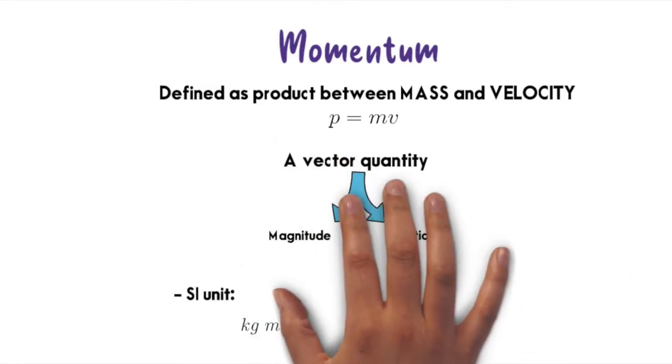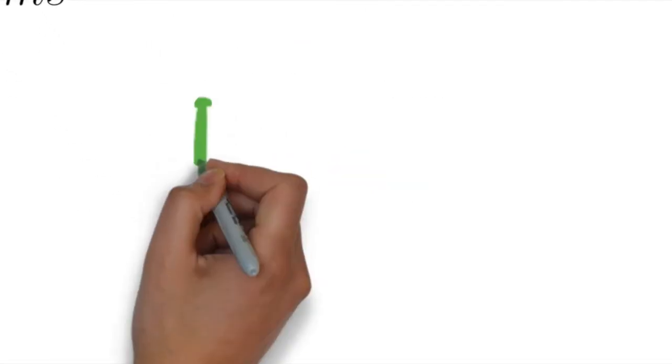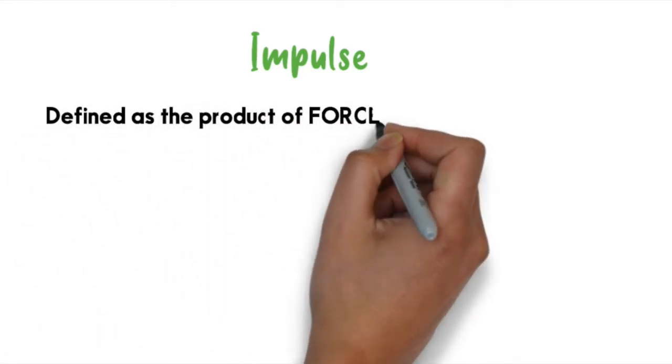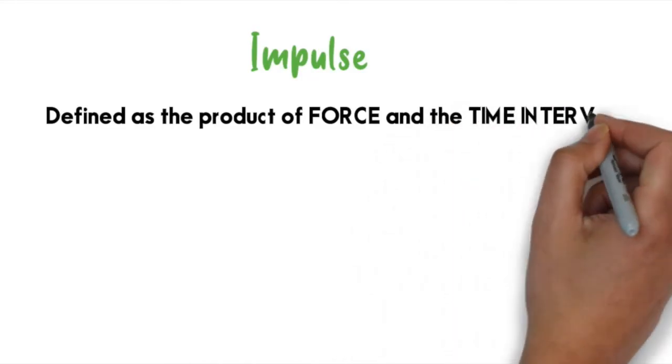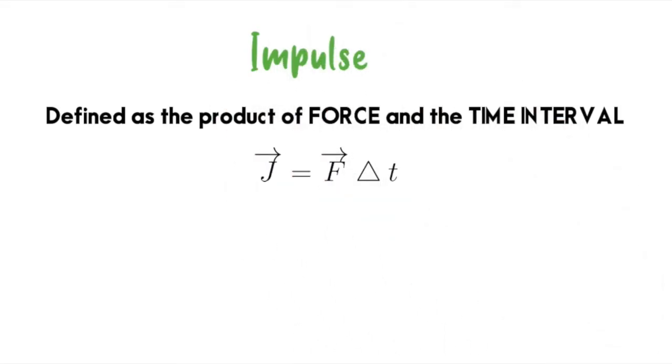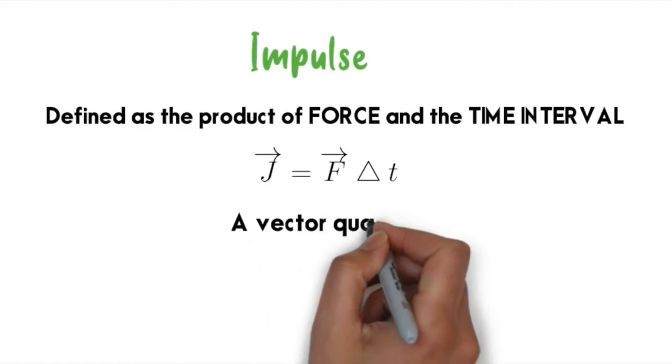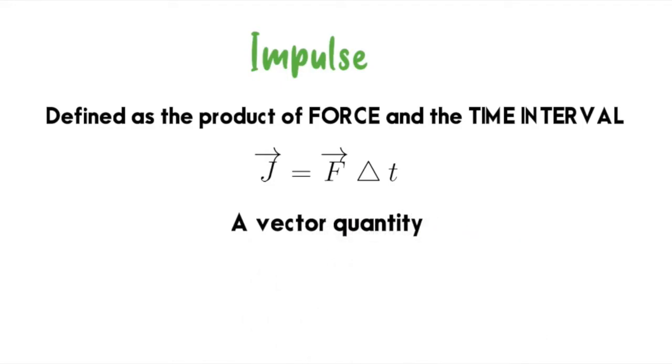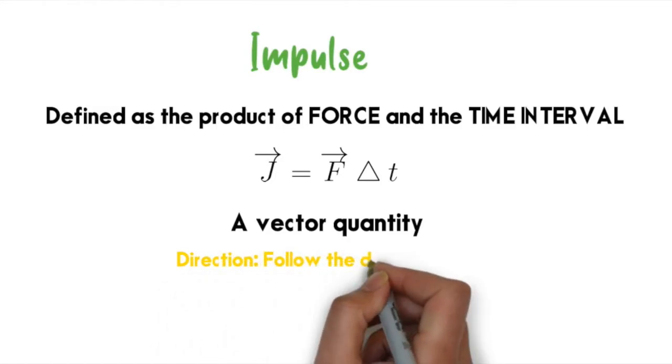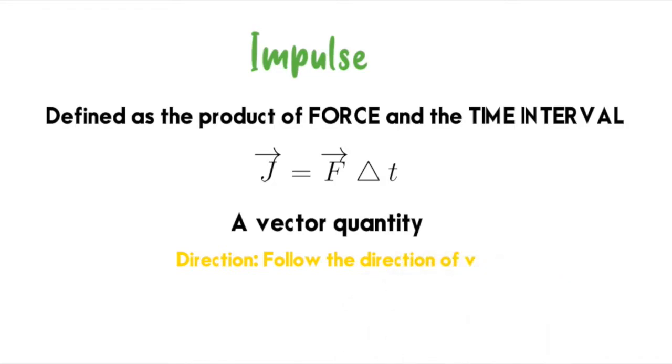Next we move to impulse. Impulse can be defined as the product of force and time interval. It can be expressed as uppercase J = F∆t. It is a vector quantity in which the direction follows the direction of velocity. The unit of impulse is Newton-second. We can see that two factors influence impulse.